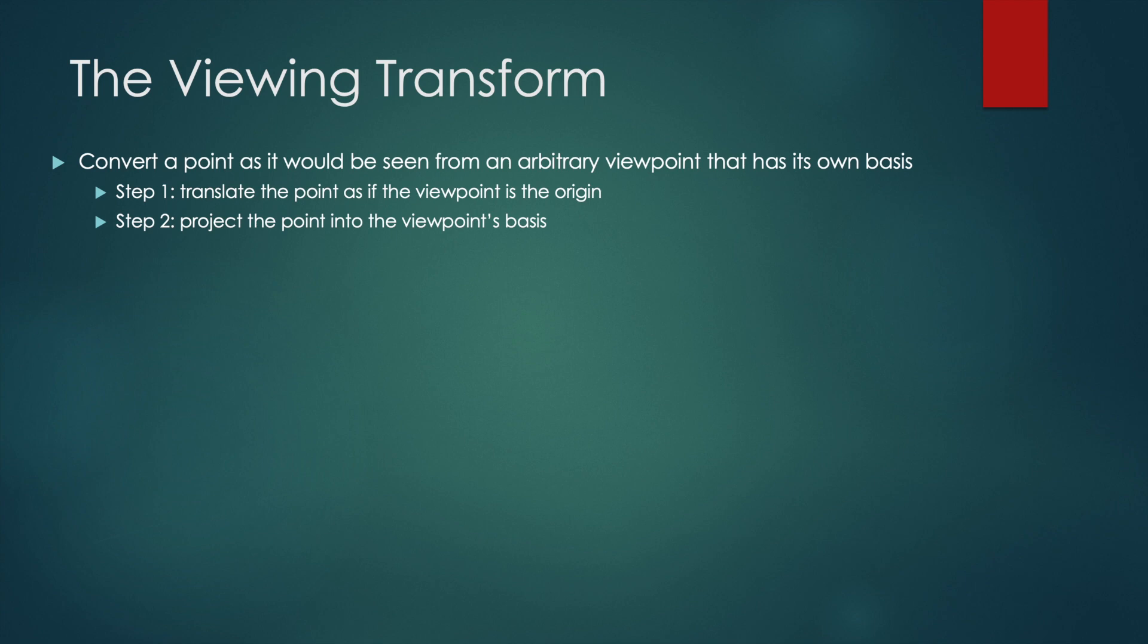Step two is projecting the point into the viewpoint's basis. That is, the new point from step one still assumes the viewpoint has the unit basis vectors along the x, y, and z axes. But if that's not the case, we must project the point along the viewpoint's actual basis vectors, which may not be the unit axis vectors.